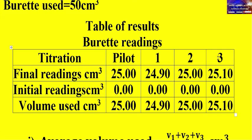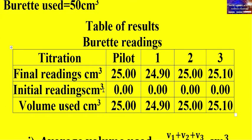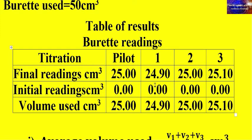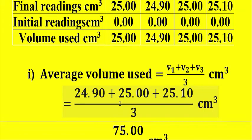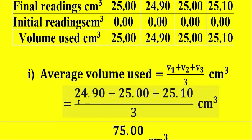The table records pilot, titration 1, titration 2, and titration 3. You record the final readings in centimeter cubed, the initial readings in centimeter cubed, and the volume used — that is the titration volume. The average volume used is calculated as: volume 1 plus volume 2 plus volume 3, divided by 3. That gives our average titration result.